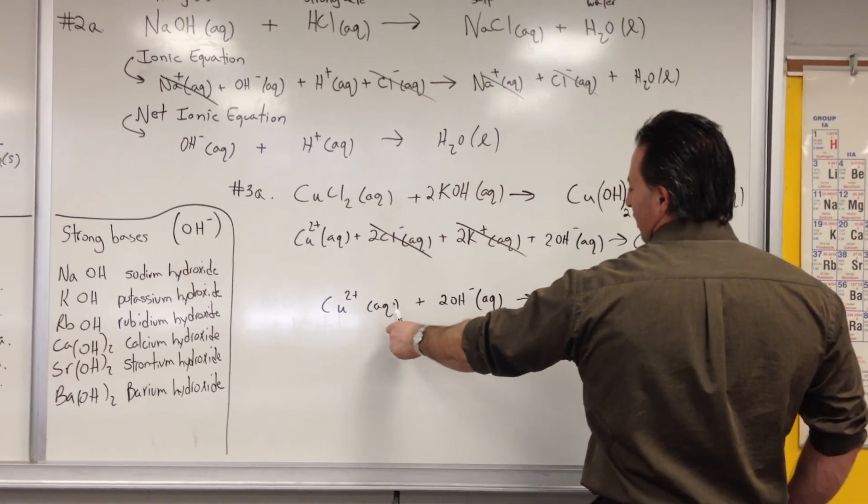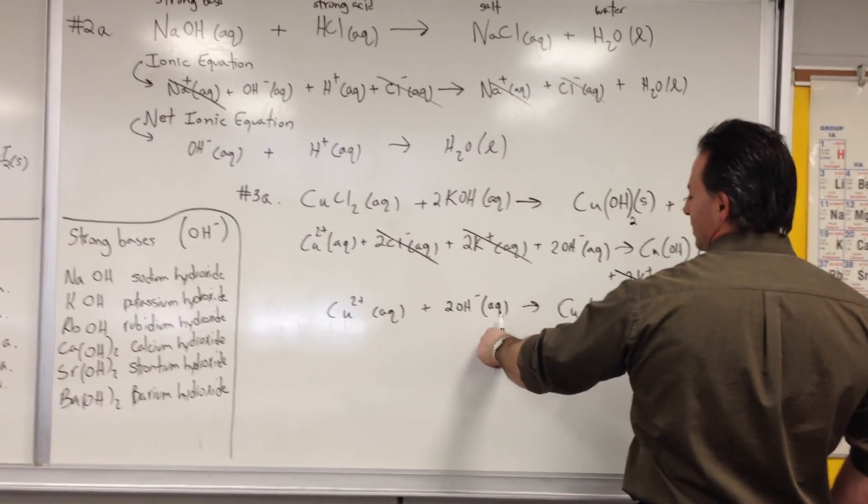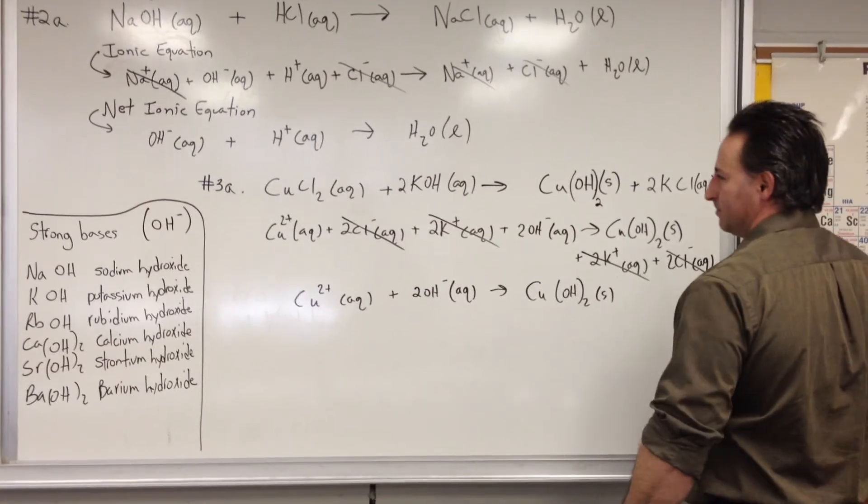And that leaves us with the net ionic equation: copper cupric cation aqueous plus 2 hydroxides aqueous gives you cupric hydroxide as a product.